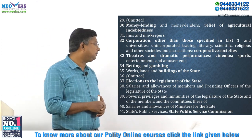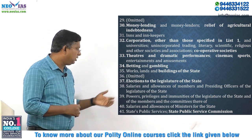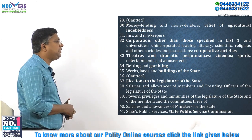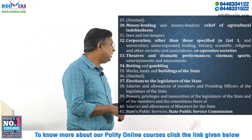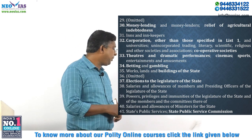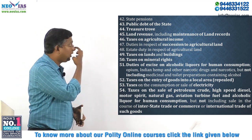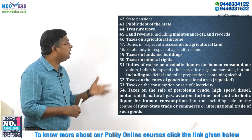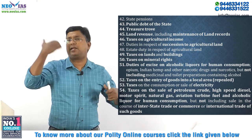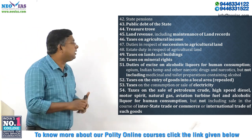Elections to the legislature of the state come under the State List. Salaries and allowances of members and presiding officers of the state legislature, powers, privileges and immunities of the state legislature and its members and committees, and salaries and allowances of the state ministers including the Chief Minister — all come under the State List. State public services and the State Public Service Commission also come under the State List. State pensions, public debt of the state, and treasure trove — meaning hidden treasures with no identified owner, which normally go to the government — are all in the State List.